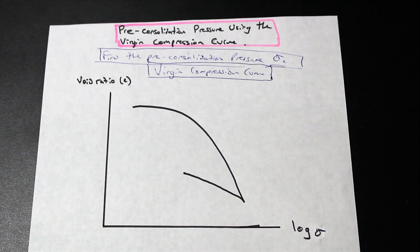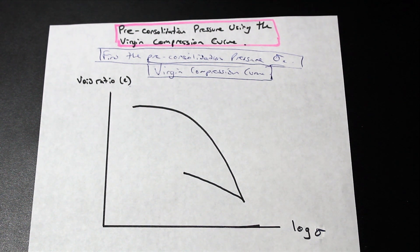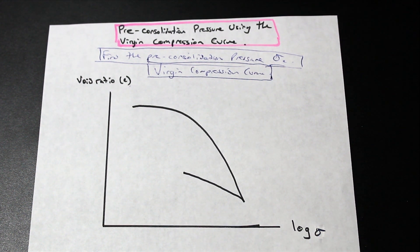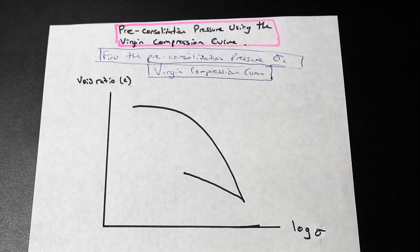the clay will drain into nearby sand layers. And that drainage over time causes a settlement. Essentially that is what consolidation is. It's a gradual increase in the effective stress of the clay layer, and it causes a settlement over a period of time.